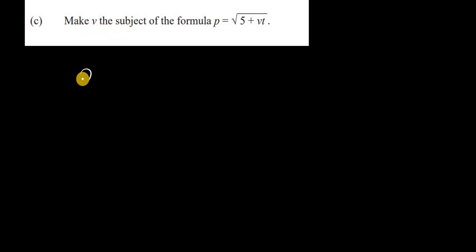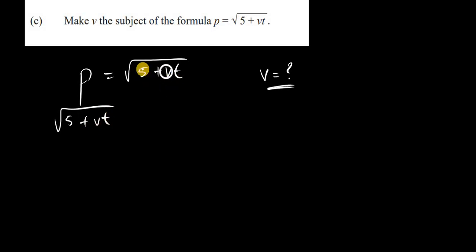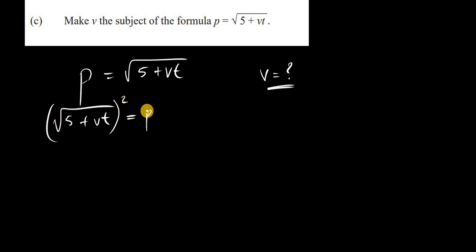We're told to make V the subject of the formula P = √(5 + Vt). To remove the square root, we square both sides: squaring cancels the square root on the left, leaving 5 + Vt = P².